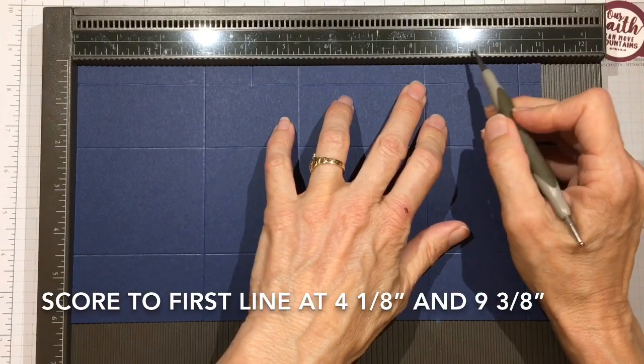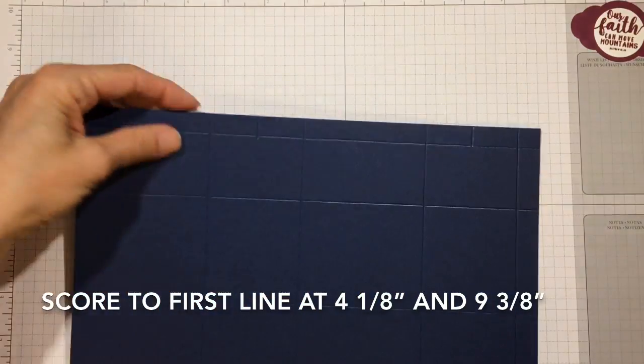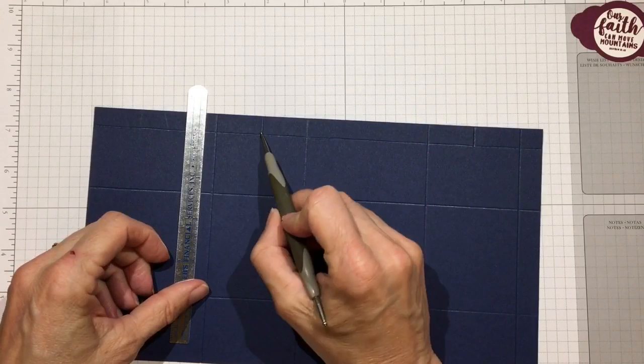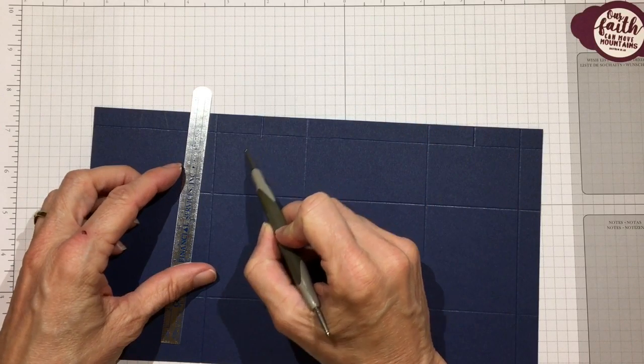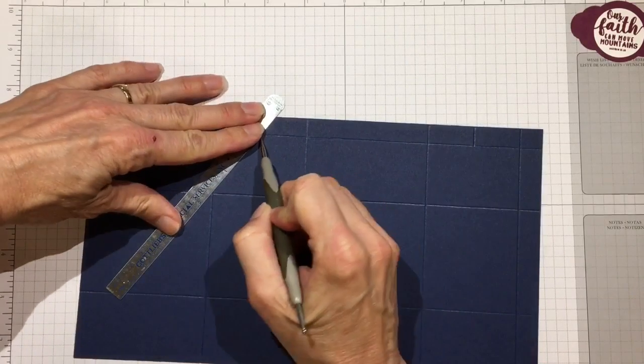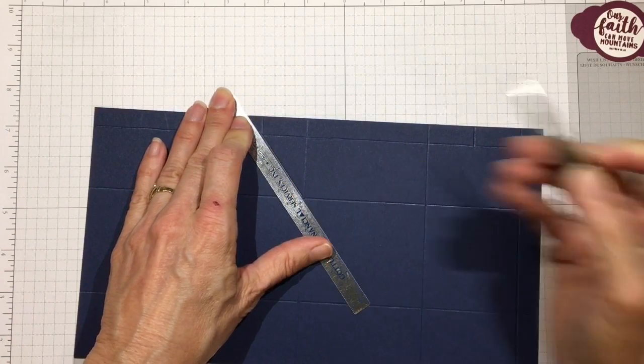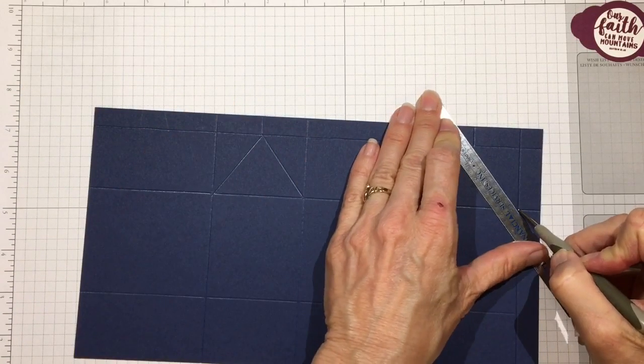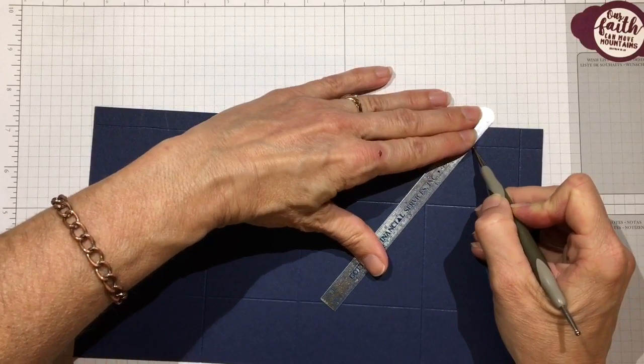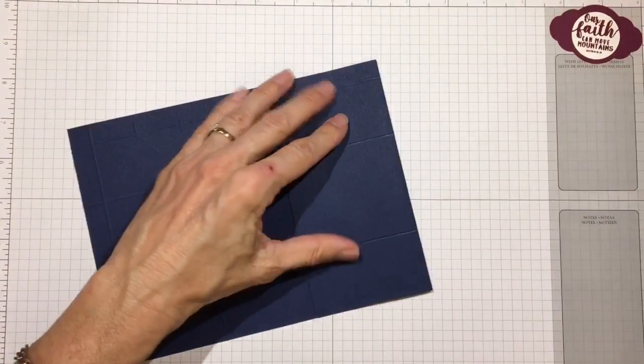We're done with our scoreboard, but we do need to make a couple additional scores. Take a ruler and a stylus, and right where that partial score line ends, we want to score down to the bottom right and the left of the rectangle that it ends in. Score down to the left and down to the right, same on this one. Now we're going to go ahead and fold and burnish our score lines. This top score line will fold back a bit, that's the top of the milk carton.